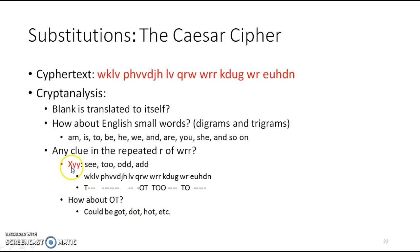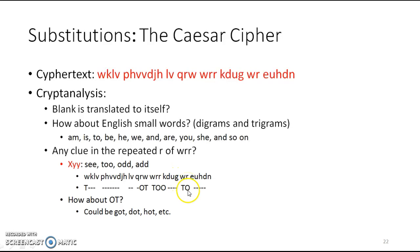X-Y-Y means two letters are being repeated. For example, if we replace x with 'o' and the double y with 'd-d', it can be 'add'. Let's suppose 'wrr' equals 't-o-o'. From here we can guess that W equals T and R equals O. So wherever we find R, we replace it with O, and wherever we find W, we replace it with T — that's the substitution.